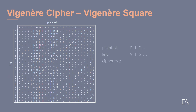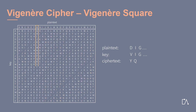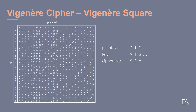We want to shortly demonstrate how this square can be used for encryption. We first look at the column for our plaintext letter D, then at the row for the key letter V — they meet at the letter Y, which is our first ciphertext letter. Next, the column of the plaintext letter I meets the row of the key letter I at the letter Q. Analogously, G and G meet at M. In total, we would obtain the same ciphertext as before.